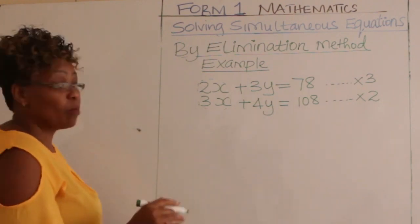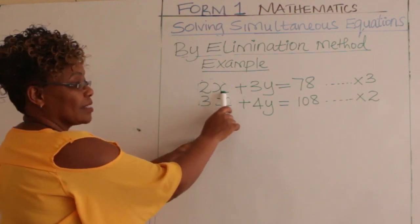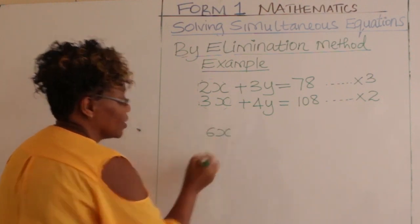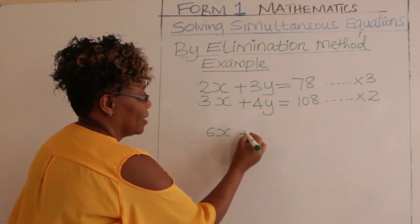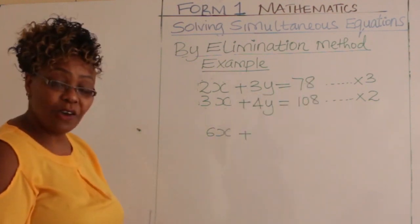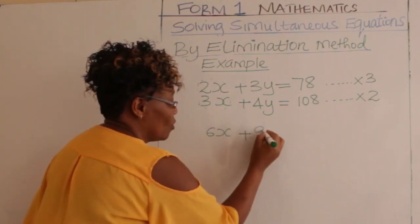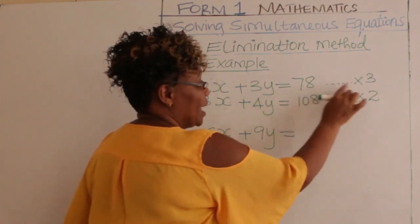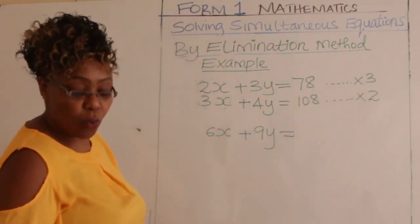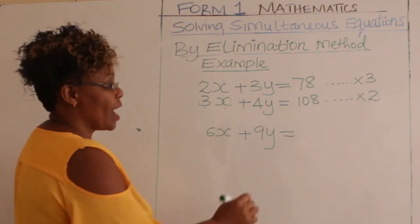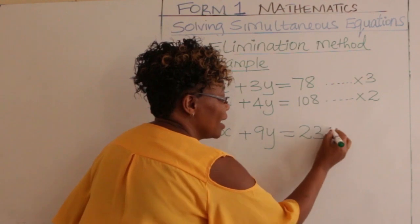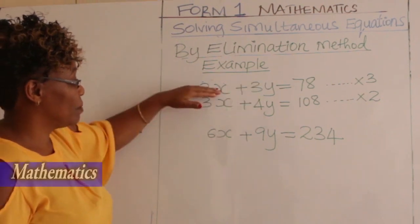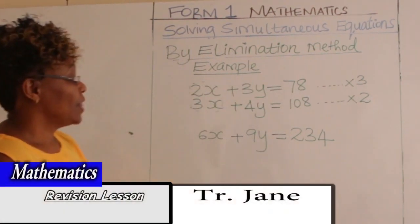Multiplying the first equation by 3: 2x times 3 gives us 6x, plus 3y times 3 gives us 9y, and 78 times 3 gives us 234. So the new first equation is 6x plus 9y equals 234.